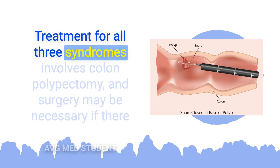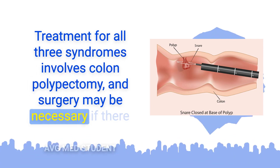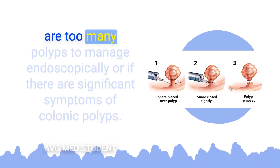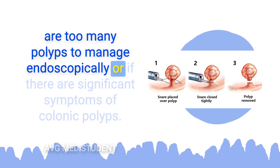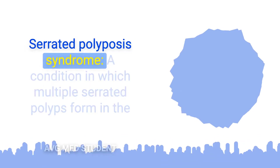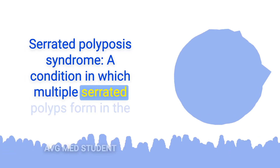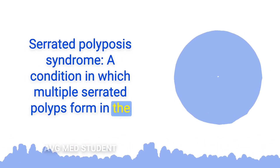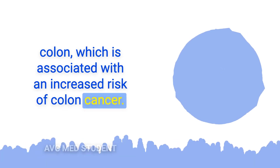Treatment for all three syndromes involves colon polypectomy, and surgery may be necessary if there are too many polyps to manage endoscopically or if there are significant symptoms of colonic polyps. Non-hereditary polyposis syndromes include serrated polyposis syndrome, a condition in which multiple serrated polyps form in the colon, which is associated with an increased risk of colon cancer.